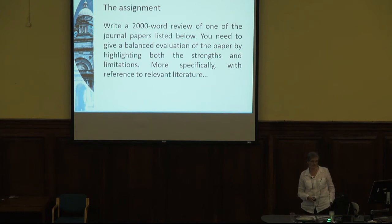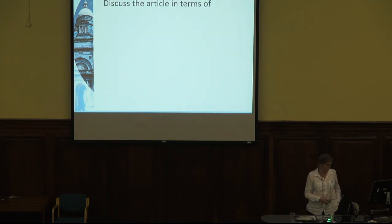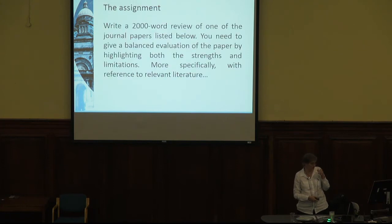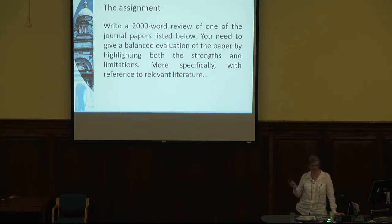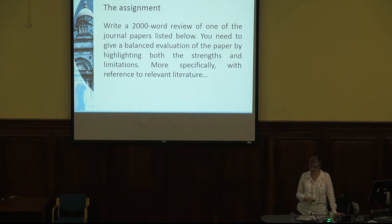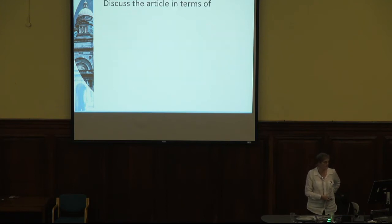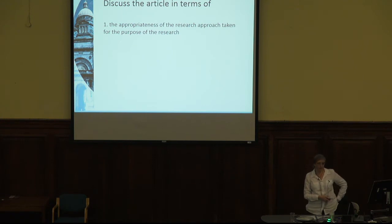More specifically, with reference to the relevant literature — and by that I mean the methodological literature, literature about research methods and research design, not literature about the topic of the paper. There are four parts to the question: the appropriateness of the research approach taken for the purpose; confidence we can have in the knowledge; whether and how potential impact is addressed; and an ethics question. Answer all four. I've been looking at formative tasks and giving feedback to make sure people answer the whole question.